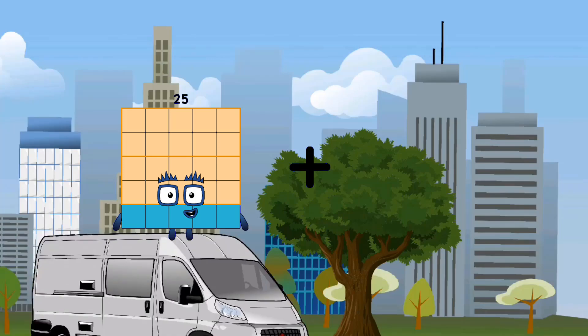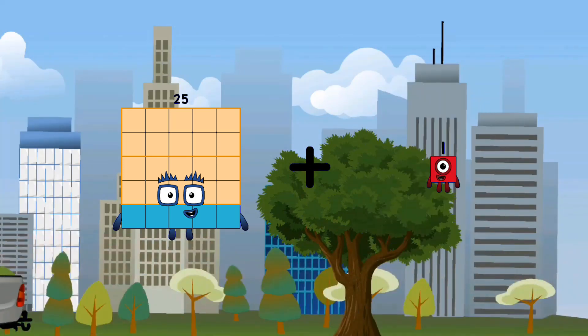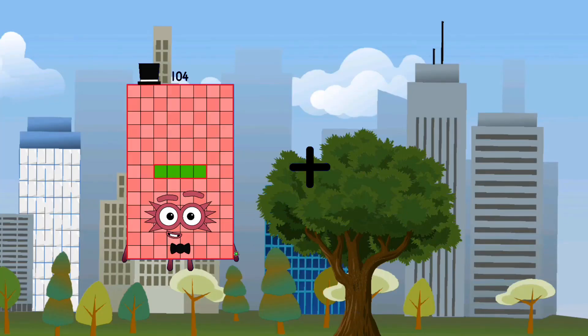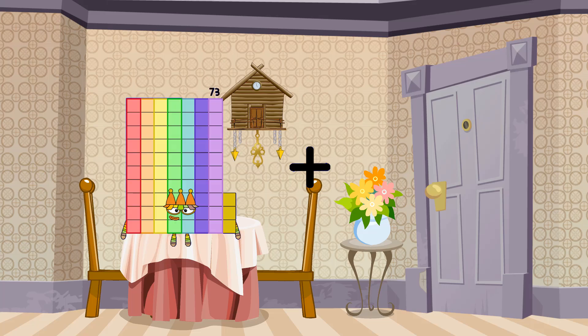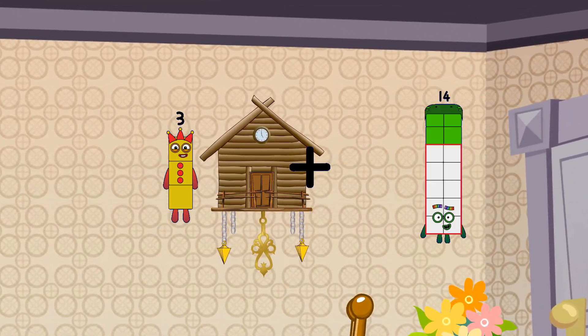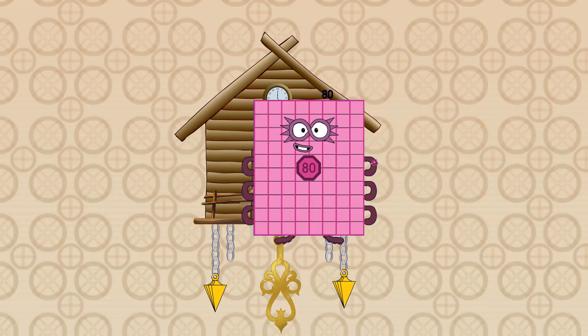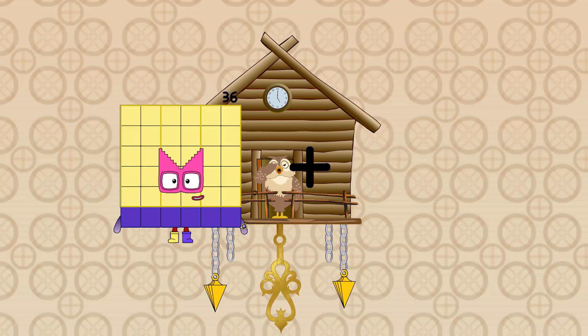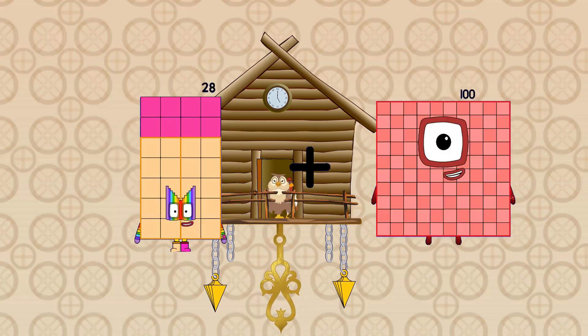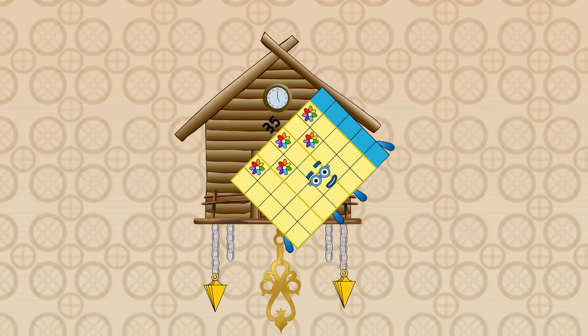25 plus 1 equals 26. 3 plus 77 equals 80. 28 plus 7 equals 35.